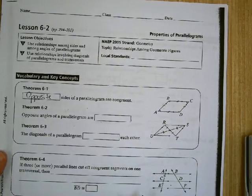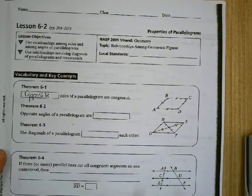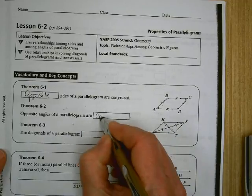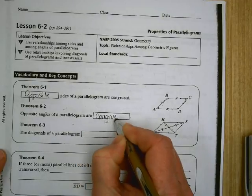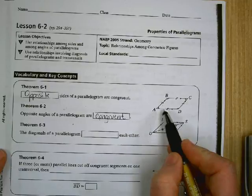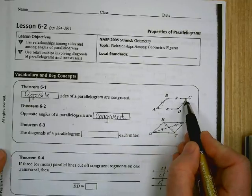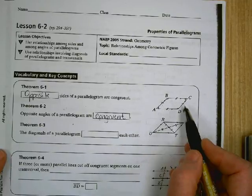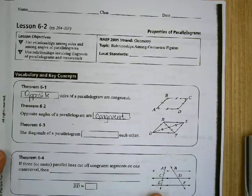Tells you that those are congruent. Opposite angles of a parallelogram are congruent. So angle A is congruent to angle C and angle B is congruent to angle D.